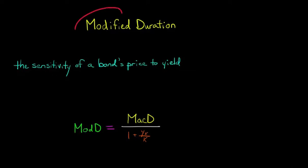In this video, we're going to talk about modified duration, which is a metric for measuring the sensitivity of a bond's price to the yield.